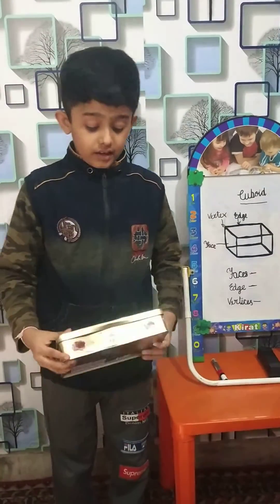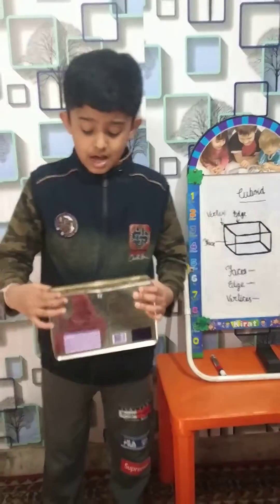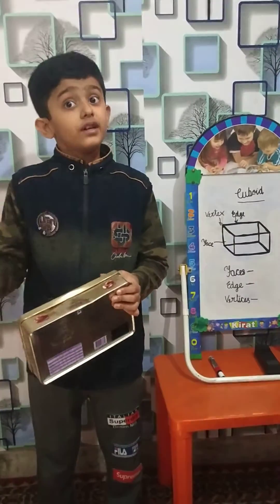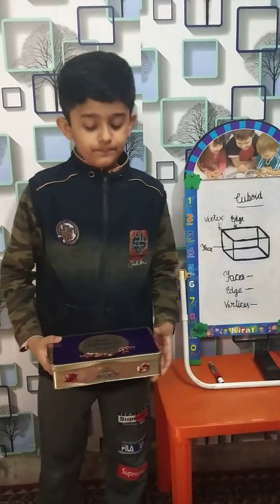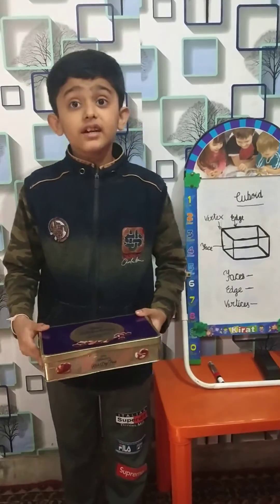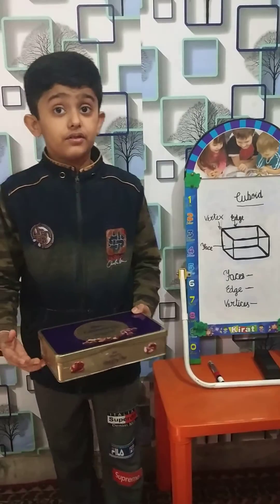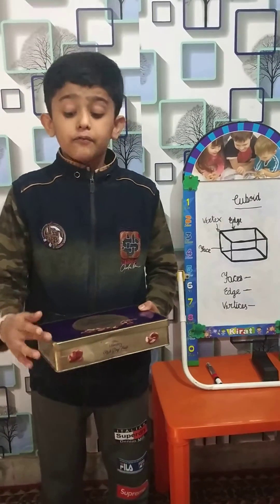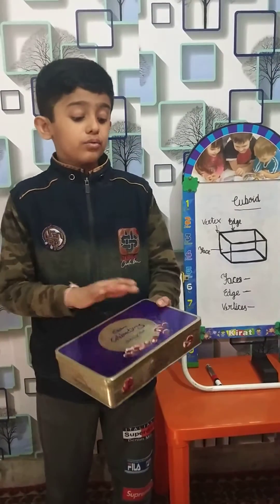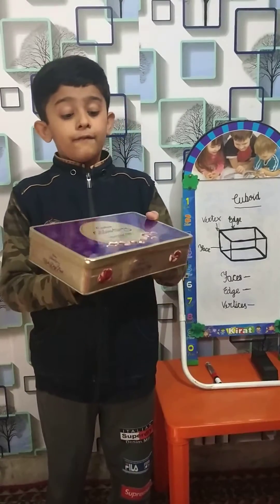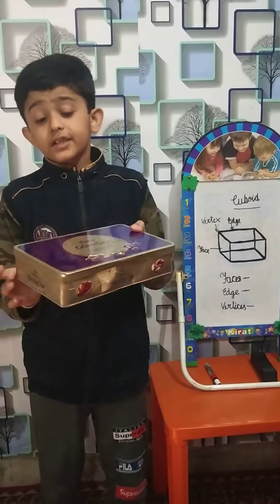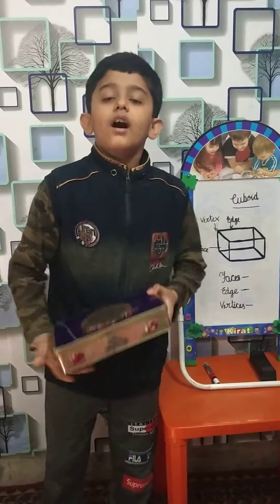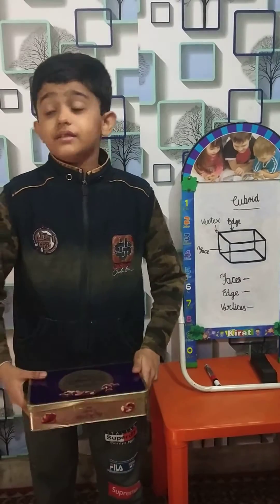What is a vertex? The meeting point of edges is called a vertex. Let us count the vertices of a cuboid object. Top side: 1, 2, 3, 4. Bottom side: 5, 6, 7 and 8. A cuboid has 8 vertices.